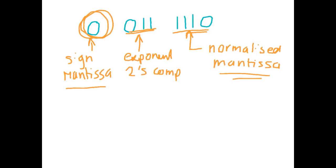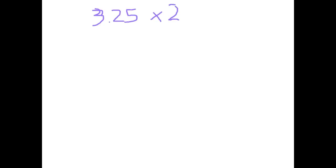We'll go through two more examples, breaking down from the original number down to a word, and then in another tutorial we'll go the other way — starting from a word and going to the decimal number. Let's start with 3.25. We put that into the formula m times b to the e, with base 2 and starting at 2 to the power of 0. Converting to binary: 3 is 011, and 0.25 is 0.01, giving us 011.01 times 2 to the 0.